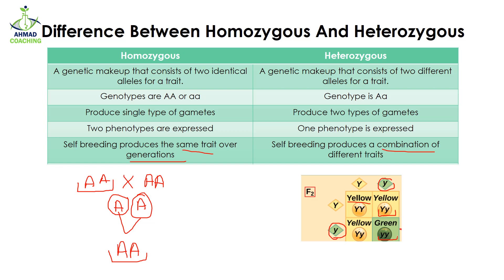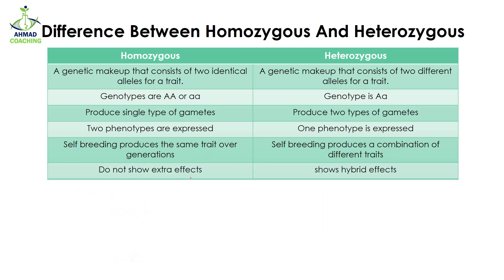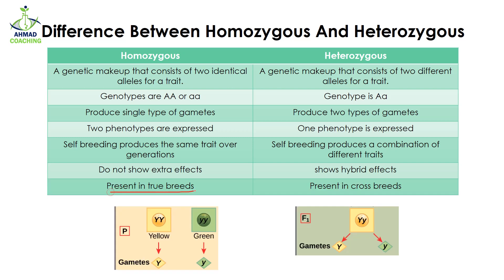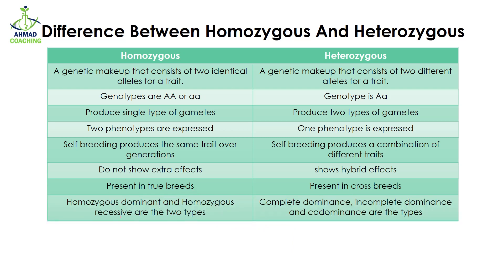Homozygous organisms do not show extra effects, but heterozygous organisms show hybrid effects — different combinations can be observed. Homozygous organisms are present in true breeds, where both alleles are the same, while heterozygous organisms are present in cross breeds or the F1 generation. When true breeds are fused together to produce the F1 generation, this cross breed is heterozygous, having two different alleles.